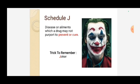Schedule J — the trick is 'J for Joker.' A joker looks one way from outside but is different on the inside. Similarly, Schedule J covers the diseases or ailments which a drug may not purport to prevent or cure. The trick to remember is 'J for Joker.'